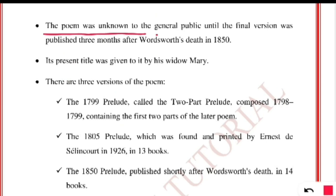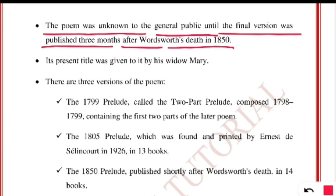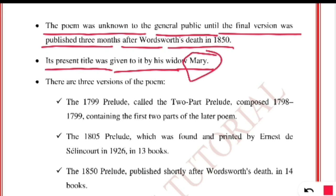The poem was unknown to the general public until the final version was published three months after William Wordsworth's death in 1850. The reason for delaying publication was that he wanted to add more refinements and details of his childhood and later life, but this caused much delay, and his wife had to publish it on his behalf. The present title was given to it by his widow Mary.